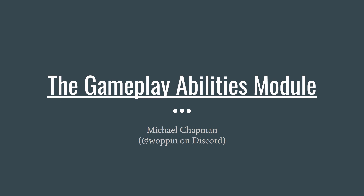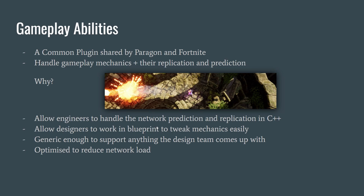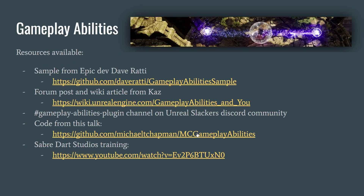Welcome back. In this video I want to go over a document shared by a gentleman named Michael Chapman — it briefly covers what the Gameplay Ability System is and what's included. GAS is a common plugin shared by Paragon and Fortnite. It handles gameplay mechanics plus their replication and prediction, allowing Epic engineers to handle network prediction and replication in C++ while letting game designers work in Blueprint and tweak mechanics easily. It's generic enough to support anything the design team comes up with and is optimized to reduce network load.